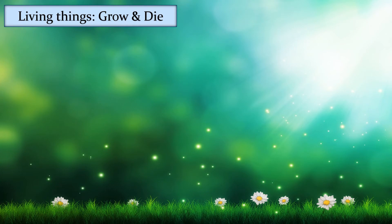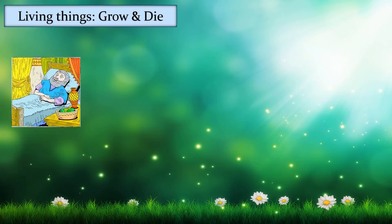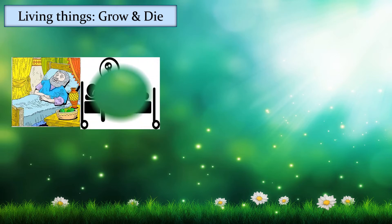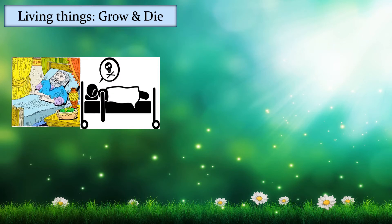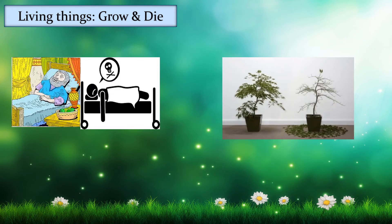Living things grow and die. For example, a man gets sick, grows old, and later on he dies. Another example is a plant — a plant grows and later on it dies.